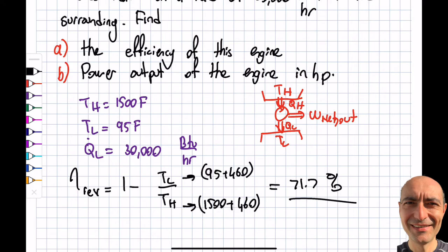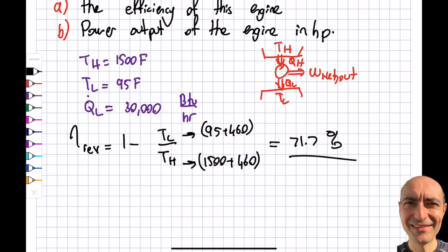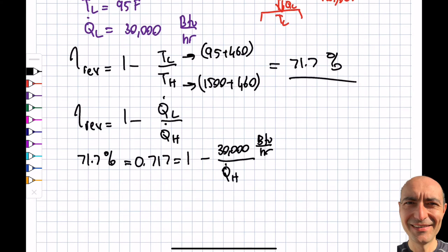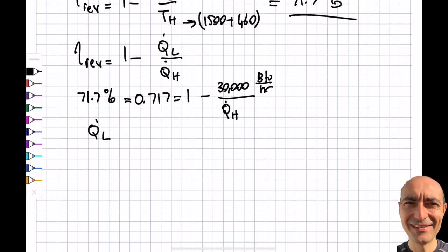Part B asks for maximum power output in horsepower. I'll write η_rev = 1 - Q_dot_L / Q_dot_H. I know 0.717 = 1 - Q_dot_L / Q_dot_H. Since Q_dot_L = 30,000 BTU/hr, I can solve for Q_dot_H. Another way: Q_dot_L / Q_dot_H = TL / TH. Sometimes this is easier to calculate.